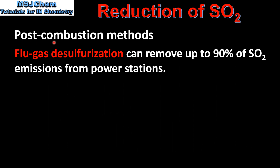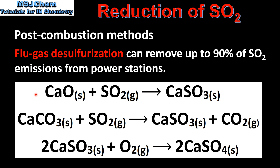Next we look at post-combustion methods. Flue gas desulfurization can remove up to 90% of sulfur dioxide emissions from power stations. In the waste gases, calcium oxide reacts with sulfur dioxide to form calcium sulfite. Calcium carbonate is also used and reacts with sulfur dioxide to form calcium sulfite and carbon dioxide. The calcium sulfite then reacts with oxygen to form calcium sulfate.